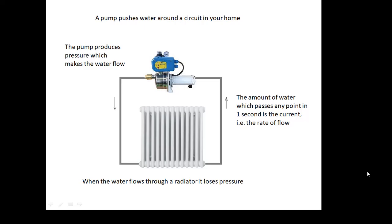It's useful to think of an electrical circuit as like a central heating system. You've got a pump and the pump produces pressure. And the pressure is pushing the water around the circuit. And then the water goes around the circuit and it goes through radiators. And when the water goes through a radiator, then it loses pressure.